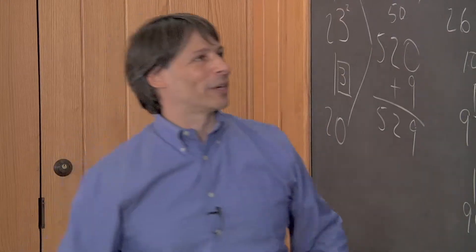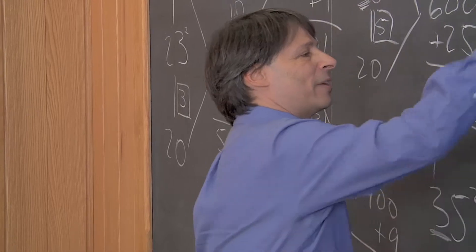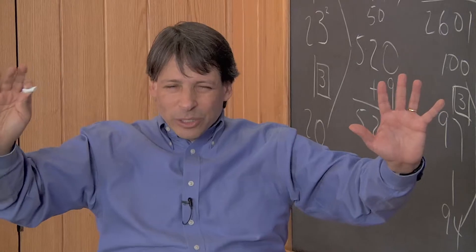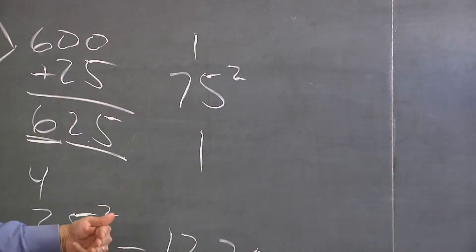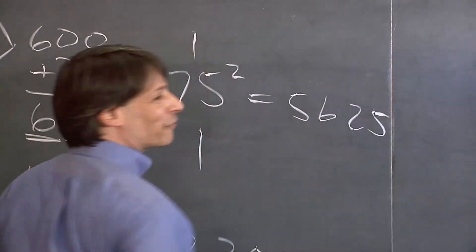Okay, you do this one. You tell me. How about squaring 75? Okay, think about it. Let's just give me the answer. How do we do this? 7 times 8 is 56, so the answer is 5625.